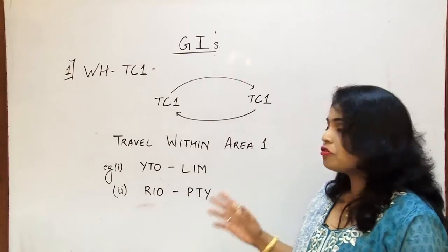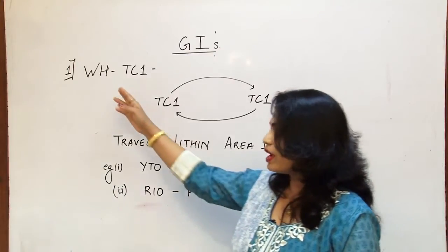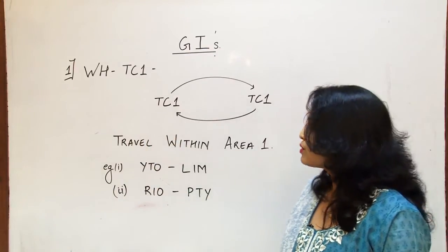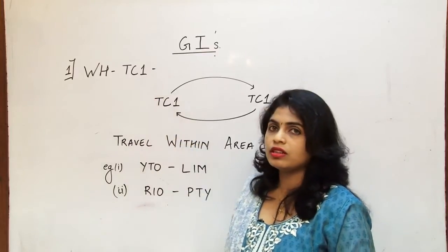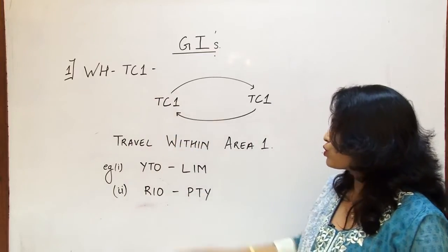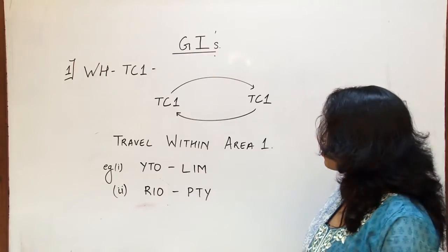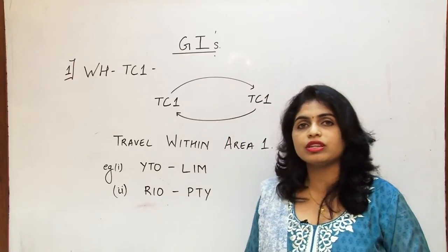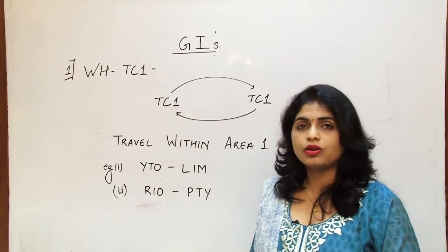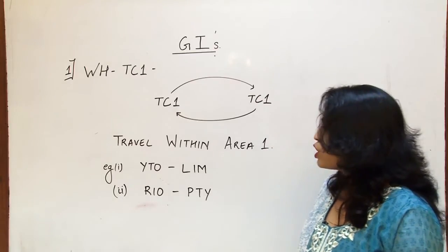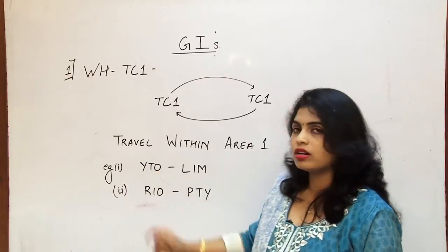Now let us concentrate on first of this GIs which I am going to take that's WH which is Western Hemisphere. It is possible only when the flight is within traffic conference area one, so when the travel is within traffic conference area one, that is if the flight is moving only in traffic conference area one. So precisely it's North America, Central America, South America and Caribbean areas.